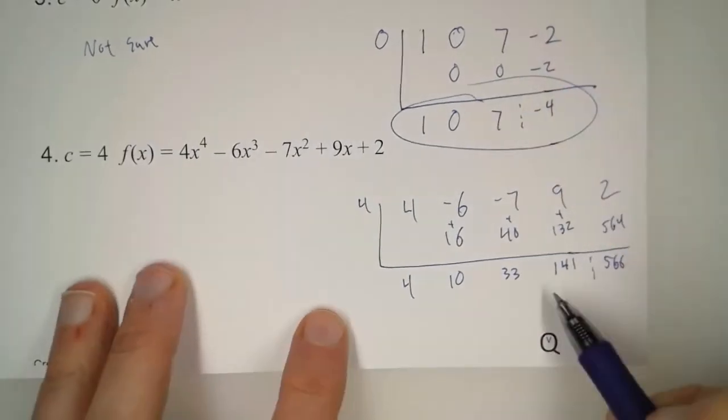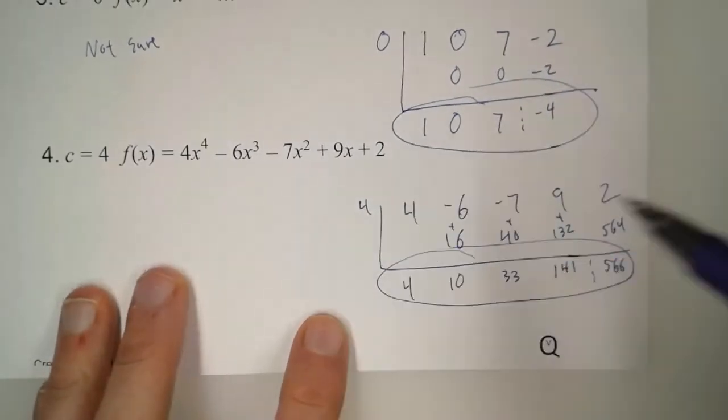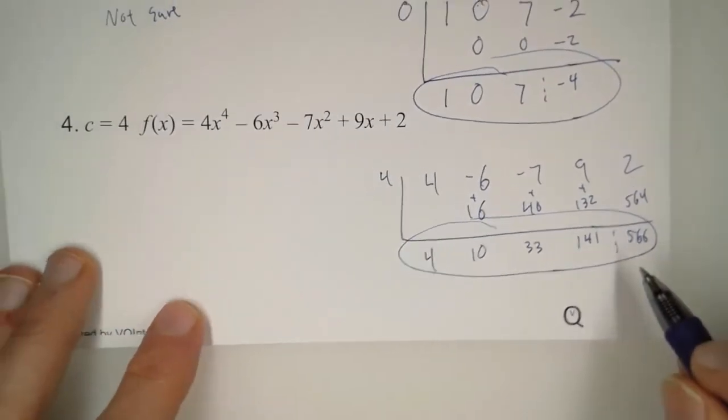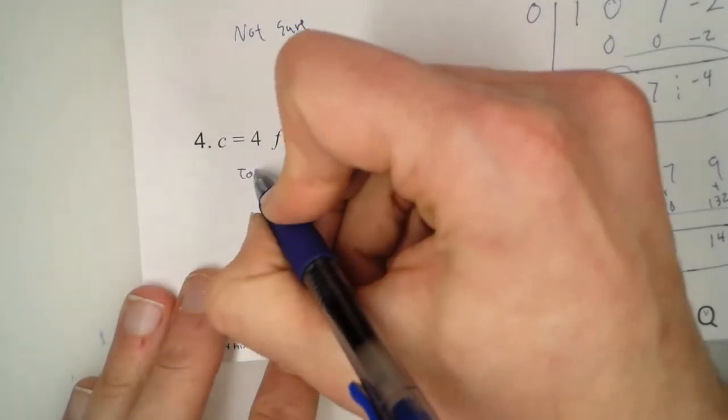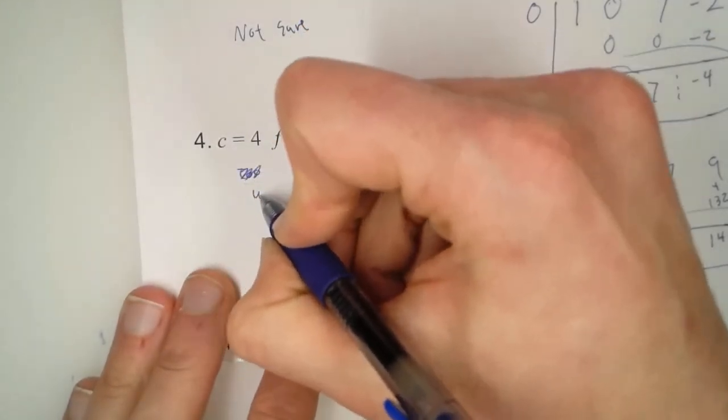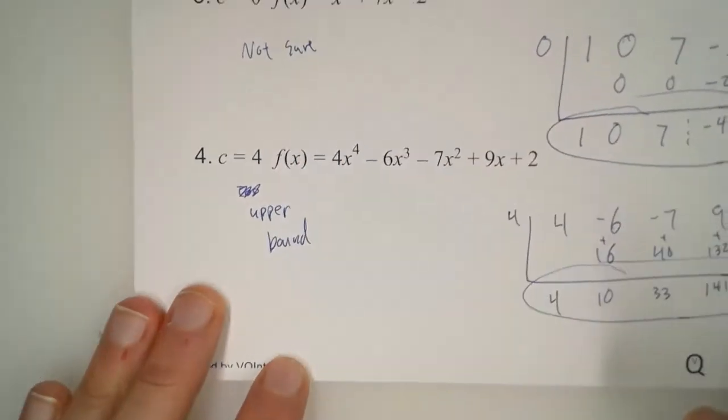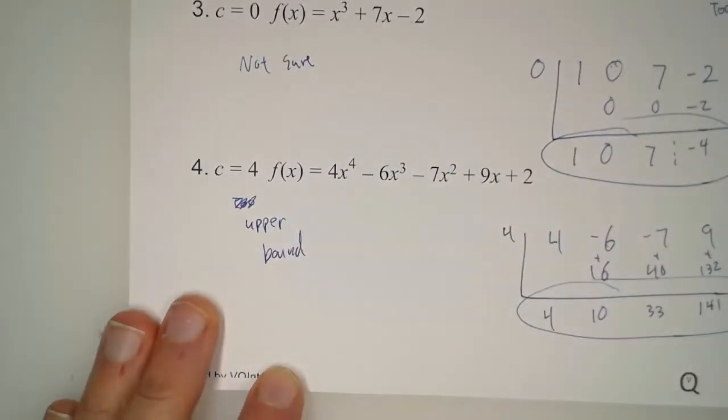Now I probably could have stopped at this point, because we could see where this was going. They're all positive. And so that means that this number is too big. That is, this is an upper bound. All the zeros that this function has has to be less than 4.